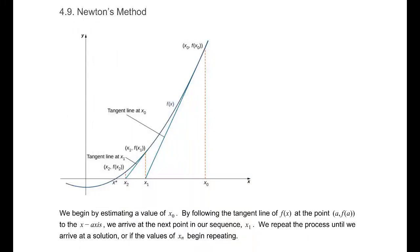Section 4.9, Newton's method. What we are after in this section is finding a root, or approximating a root of a polynomial, preferably, although this will work for any function. But our examples are going to look a lot like polynomials.